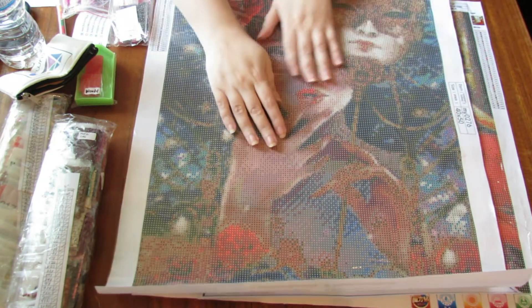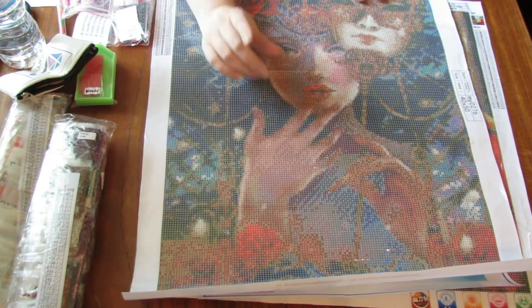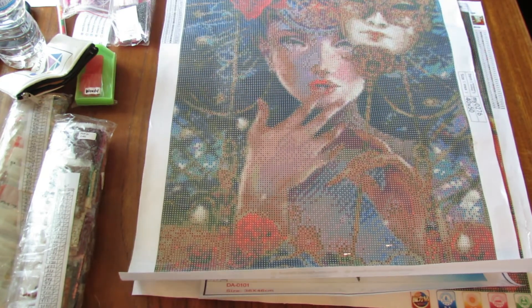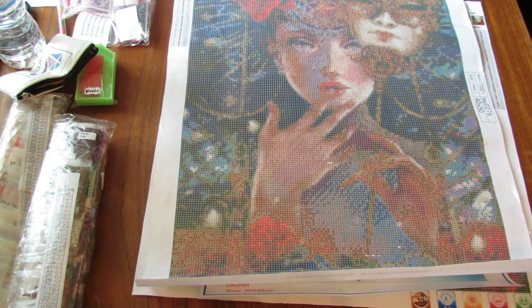I'm very bad with getting the plastic out. So yeah this one is 50 by 40 and it has 35 colors. 40 by 50, 50 by 40. I think I always say that backwards.